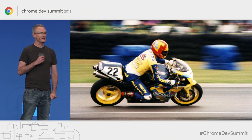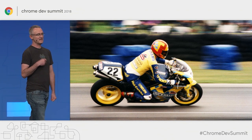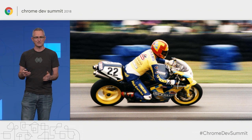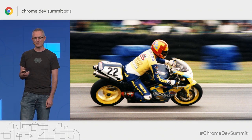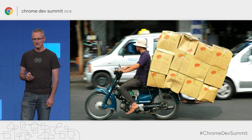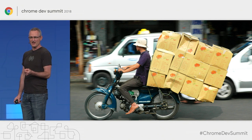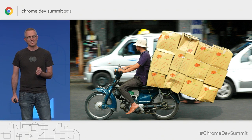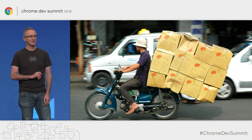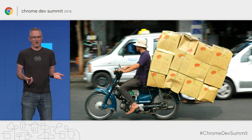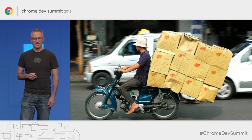Ben and Dion mentioned in yesterday's keynote that today's web platform is really a high-performance machine — way faster in almost every way than it was even a few years ago. But there are still some surefire ways to slow it down. One of those ways is just trying to render too much. Especially on low-end mobile devices, you can bring performance to a crawl by piling on too much DOM.